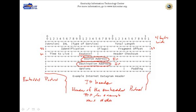So these embedded protocols — we have a byte here that tells the TCP/IP stack on the receiving computer what to expect. If memory serves me well, if there's a 01 here it's going to be ICMP, and if it's 06 I think it's TCP.